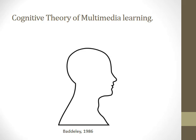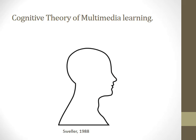Working memory includes visual and auditory channels. People learn through their eyes and ears. Working memory has a finite capacity — there is a limit to the amount of information people can process and store.